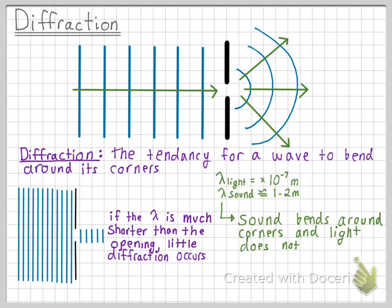An interesting application of diffraction is when you think about your experiences hearing and seeing around corners of a building. You are able to hear someone talking around the corner of a building because the wavelength of sound is around one to two meters, which is around the same size as the opening of a corner. So the sound waves are able to diffract around the corner and you can hear the person talking.